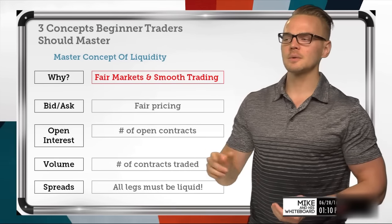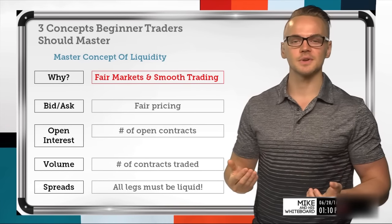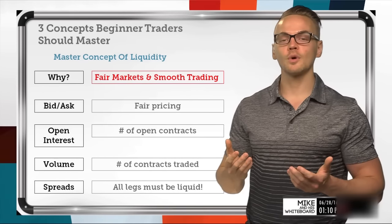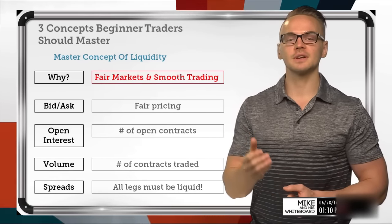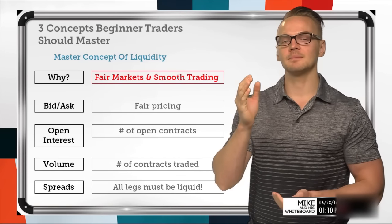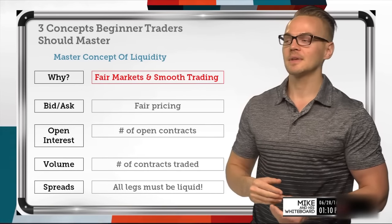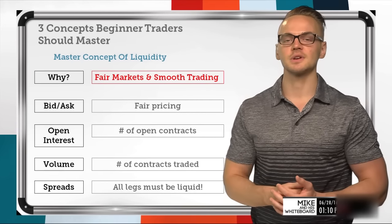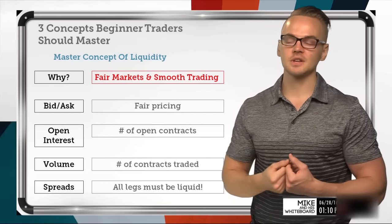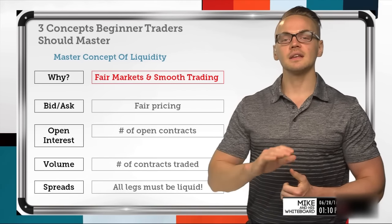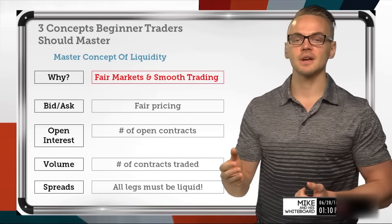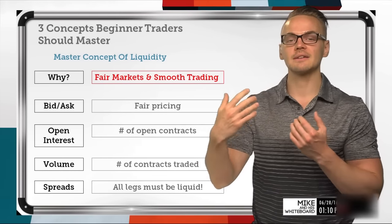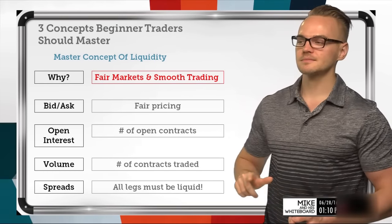Another thing we're looking at when talking about liquidity is open interest. Open interest is really just the number of outstanding or open contracts for a specific strike. For example, looking at an expiration in July and a 195 strike in SPY, the open interest shows the number of open contracts at that specific strike and expiration. If I open a trade and there's a lot of open interest, then in the future if I want to close or roll that trade, I should be able to.